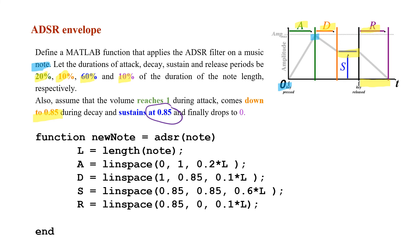All that remains is to define new_note, the output of the function. new_note is calculated as note element-wise multiplied by the concatenated ADSR array: new_note = note .* [A, D, S, R]. This applies the amplitude envelope to each element of the note signal. This completes the definition of the ADSR envelope function.